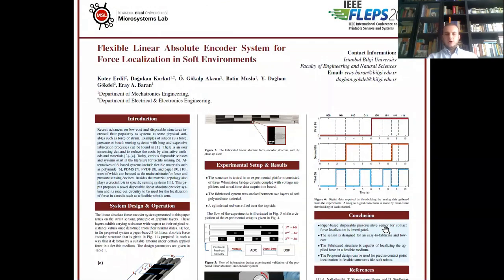Our conclusion is, the contact force localization is carried out. And two, the sensor is designed to use disposable components. And these materials display an easy to fabricate and low cost alternative over the ones produced through clean room. One, the fabricated structure is capable of localizing the applied force in a flexible medium. And the last thing is, the proposed design is able to use for precise contact point localization in flexible structures like soft robots.